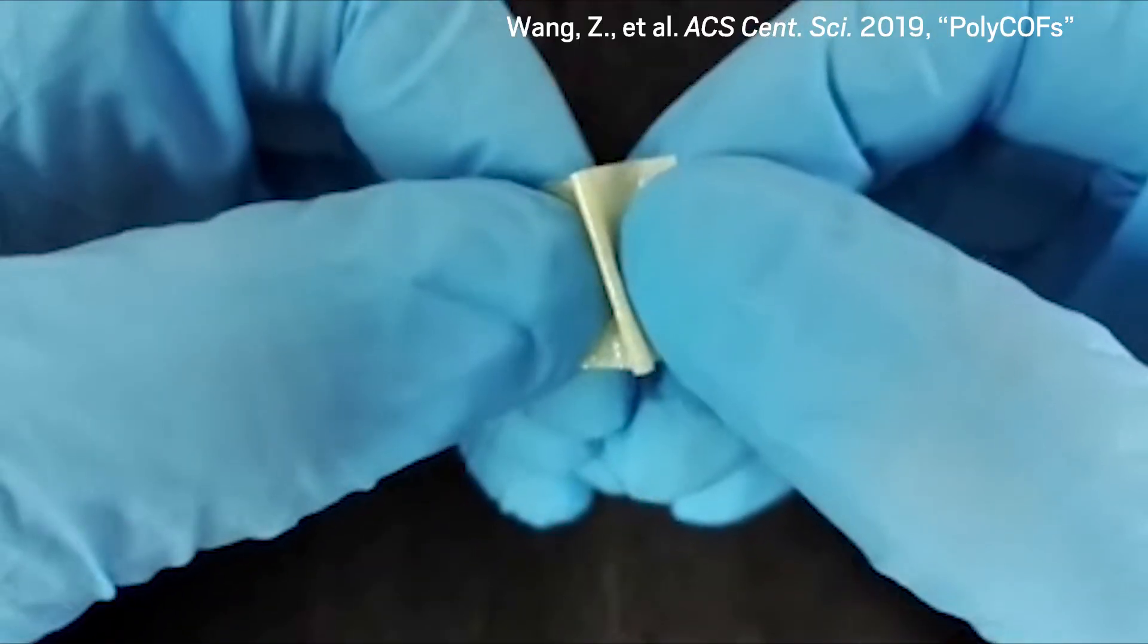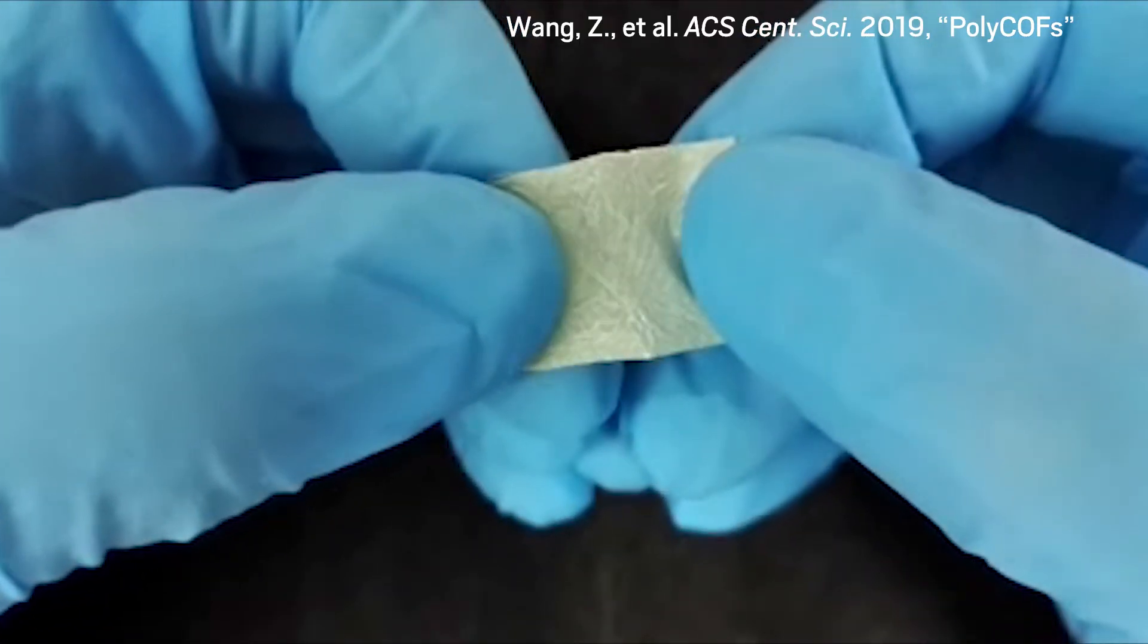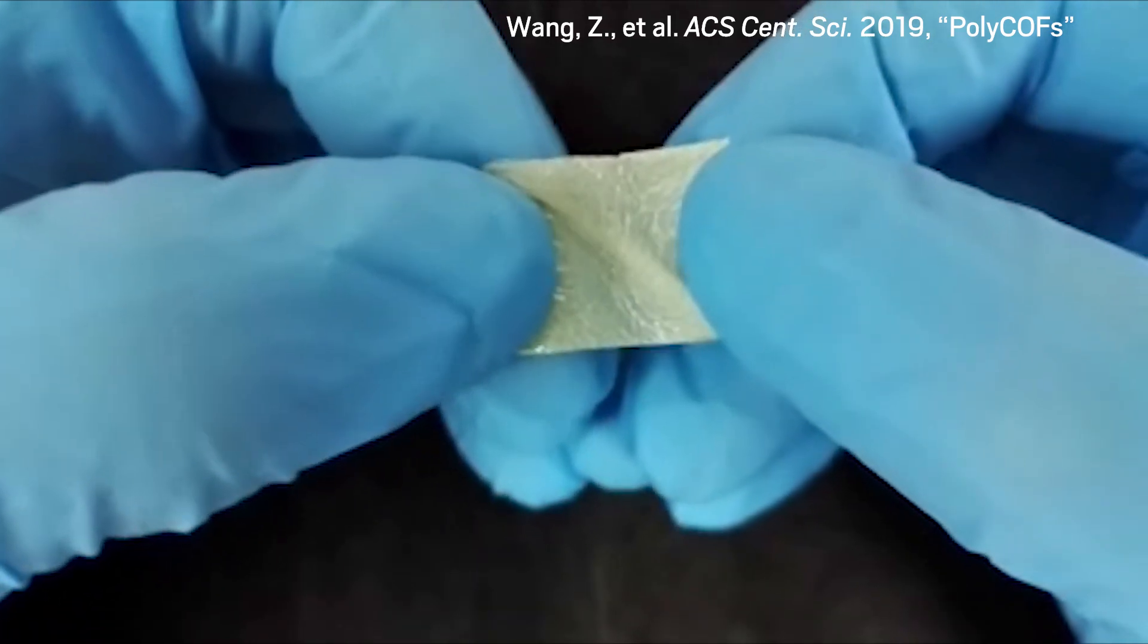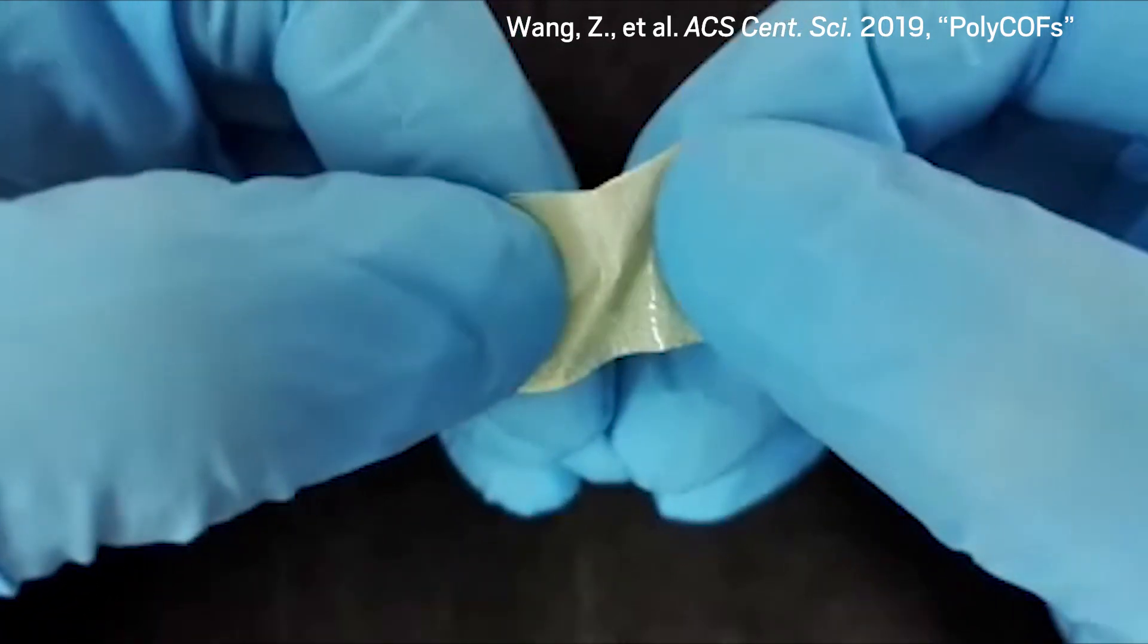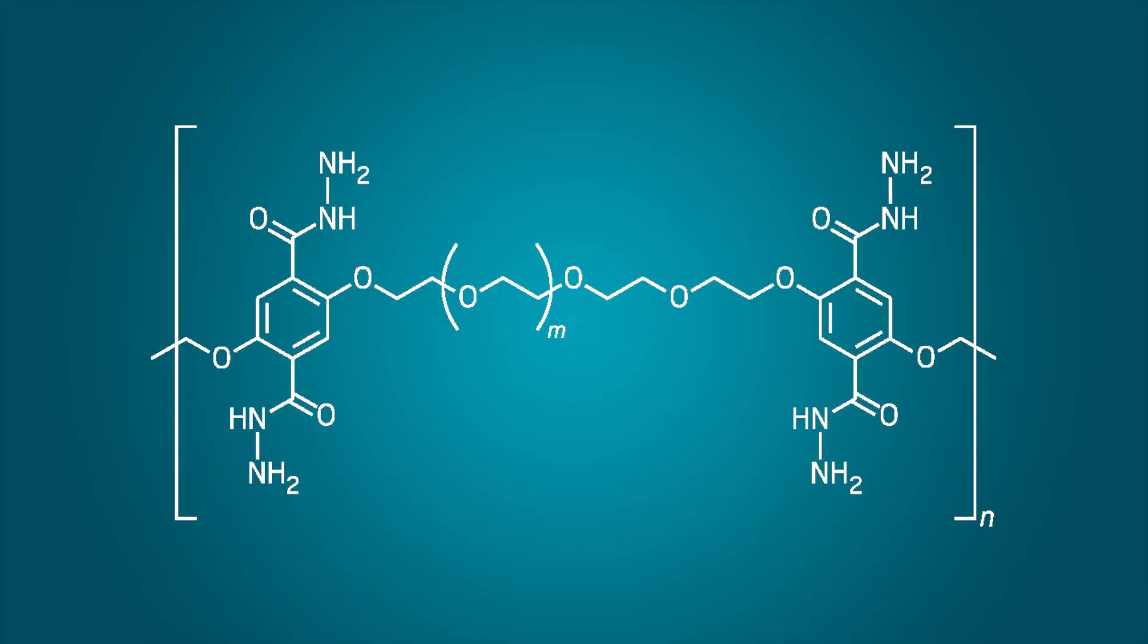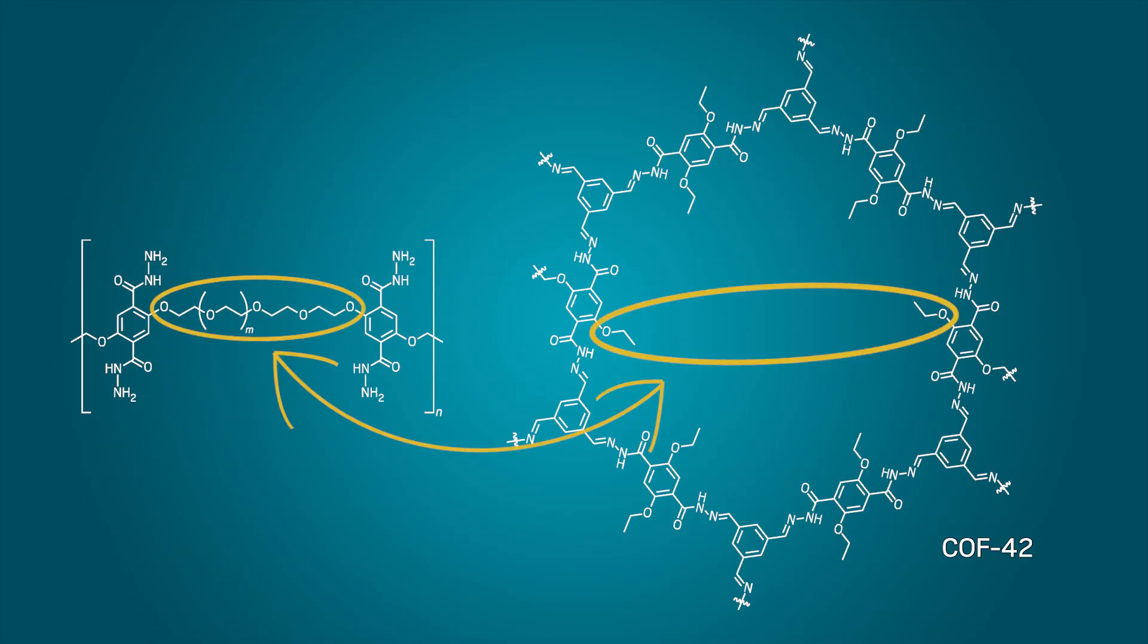Now, researchers at Nankai University, Tianjin University, and the University of South Florida have made strong, flexible COF films by combining the COF with polymers. They took a polymer strand containing polyethylene glycol units and linked it between the building blocks of an existing COF, known as COF-42.